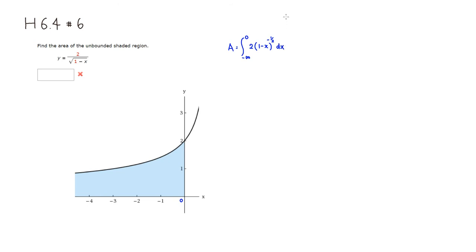I'm going to use the general power rule to find the antiderivative. But before we do that, I'm going to change it to a limit. The problem is we have negative infinity, so I'm going to change that to A. So we have the integral from A to 0, where A is approaching negative infinity. Then we have 2 times (1 minus x) raised to the negative 1/2 power, dx.